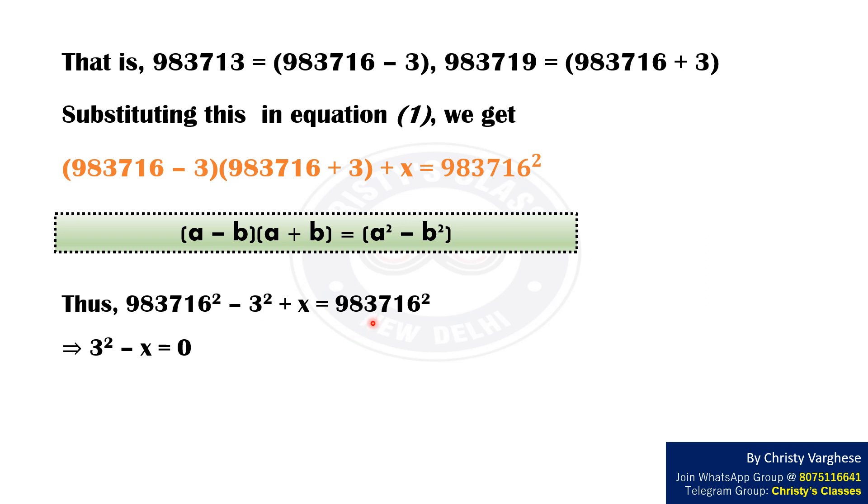On canceling 983716² on both sides, we get 3² - x = 0. This implies x = 3², which is 9.